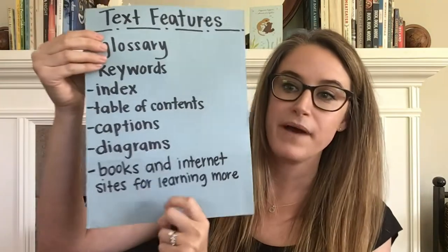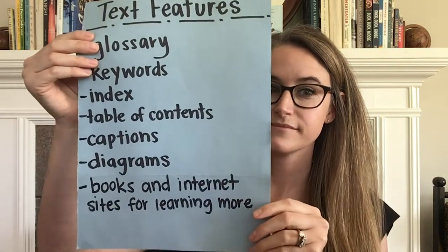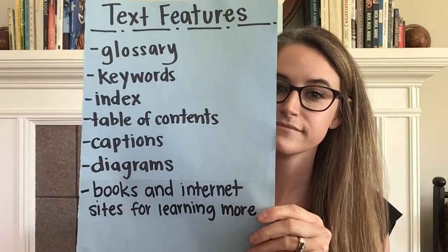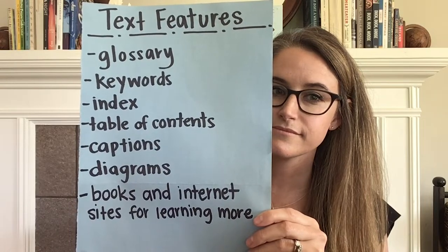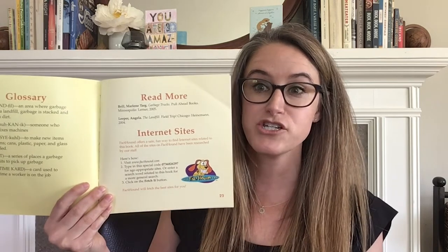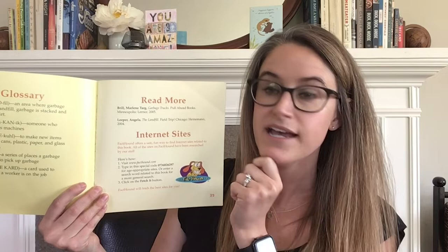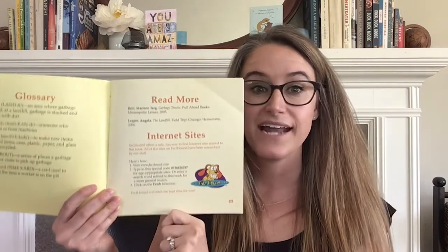Now, what do you remember about books and internet sites for learning more? That's what we looked at in our last lesson as well. We talked about how sometimes we wonder as we're reading, and when we learn about something it sometimes brings even more questions. Sometimes our book is not going to answer all those questions, so we can read more books or do more research. This text feature in a nonfiction book gives us some of that information already, so we know which books or internet sites to check out to learn more about garbage collectors.